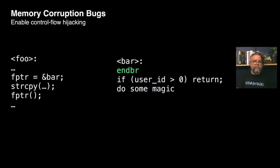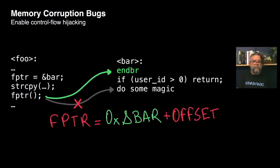Because of situations like this, Intel introduced Indirect Branch Tracking, IBT, which is part of CET. What IBT does is that it requires every indirect call and indirect jump to target an end-branch instruction, just like the one highlighted in green in the function bar. Such a policy blocks attackers from freely redirecting the forward branches, preventing situations like the one just described.